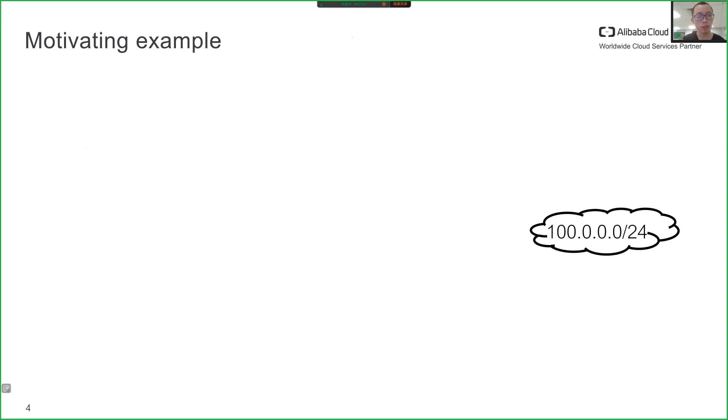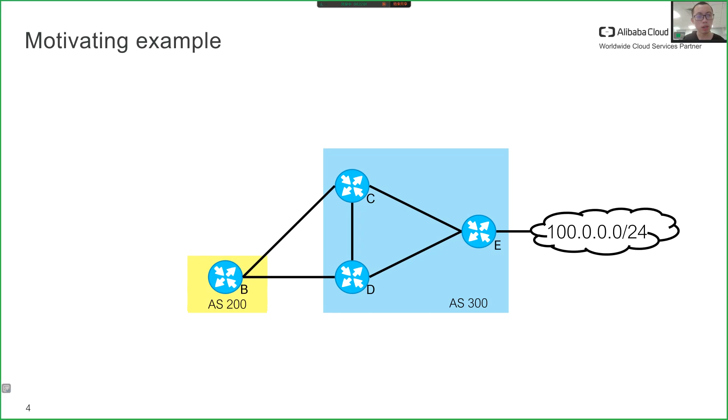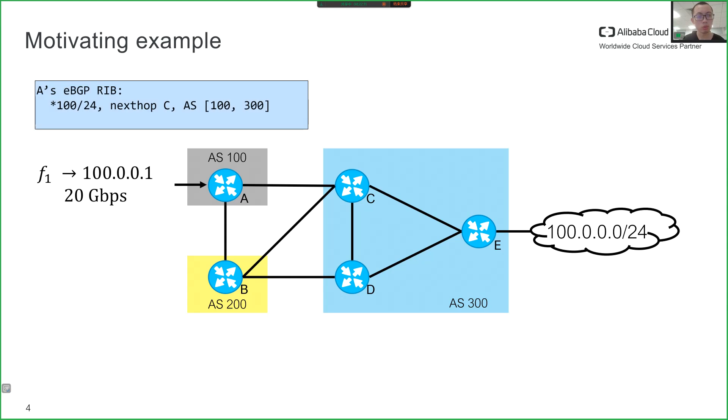Let's start with an example network. A prefix is advertised into three autonomous systems: AS 300, 200, and 100. The flow F1 enters AS 100 at router A. The first route at router A has router C as its next hop and passes through two ASes, AS 100 and AS 300. The second route passes through three ASes: AS 100, AS 200, and AS 300. The route with fewer ASes in the AS path is preferred over the other, so all traffic is forwarded to router C.